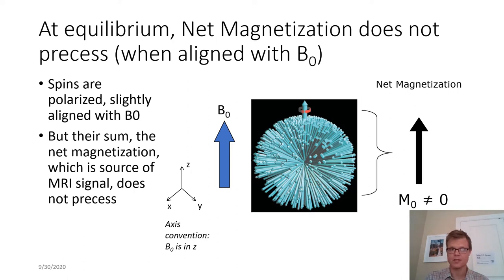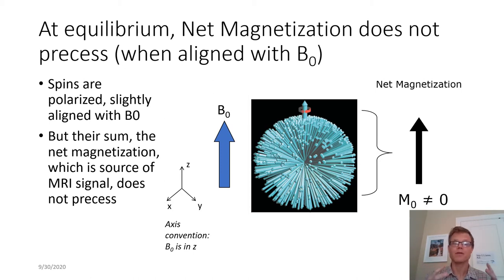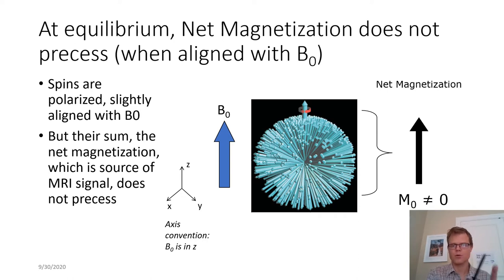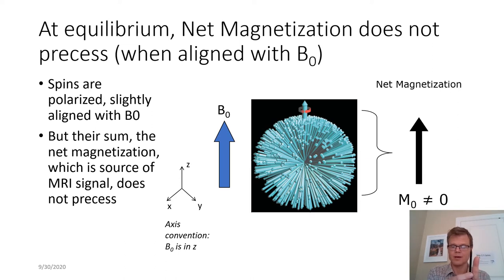I also showed in the previous lecture that at equilibrium, the net magnetization actually does not precess. The subject goes into the magnet, the spins become slightly preferentially aligned with B0, giving us a slight net magnetization pointed along the direction of B0. When B0 and the net magnetization are pointed together, the net magnetization cannot rotate around it — it's pointed in the same direction. It's only when the net magnetization is deflected somewhat from the B0 field that it will begin to precess. That's the fundamental problem that RF pulses are going to address.